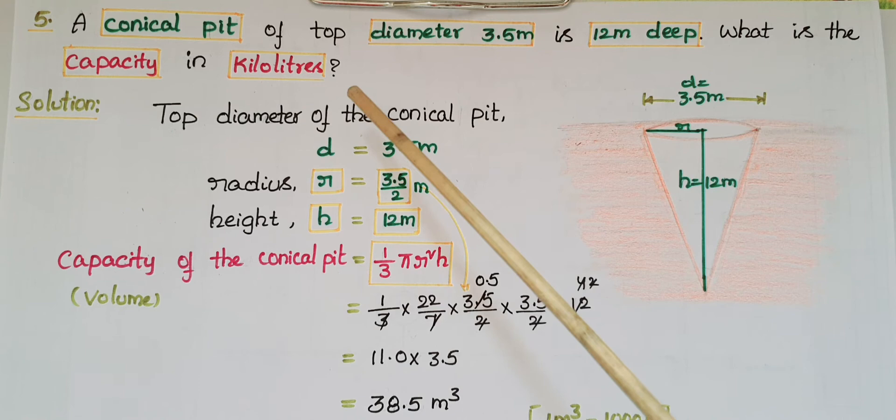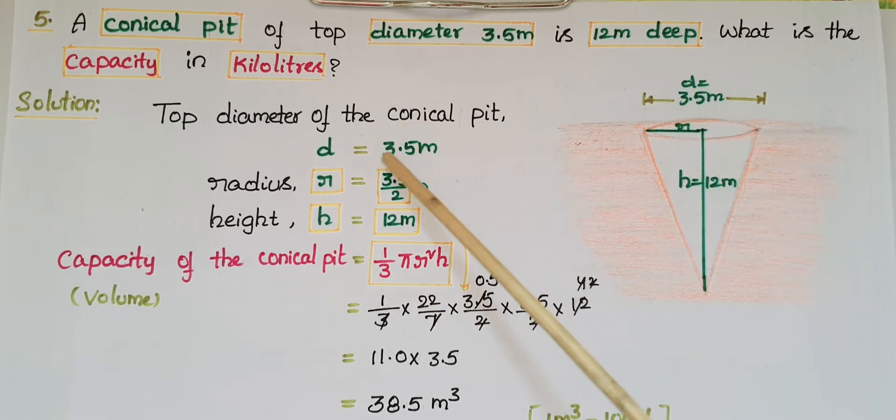The top diameter of the conical pit is given as d = 3.5 meters. The radius r = diameter/2 = 3.5/2 meters. The height h = 12 meters. We need to find the capacity of the conical pit.